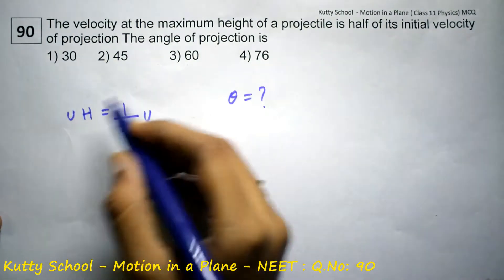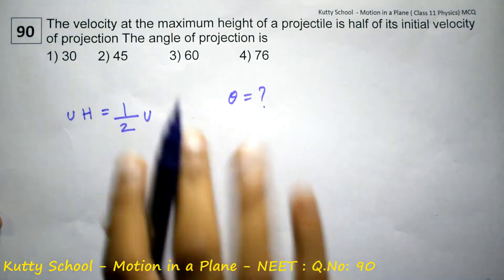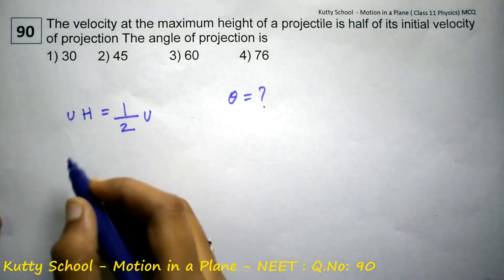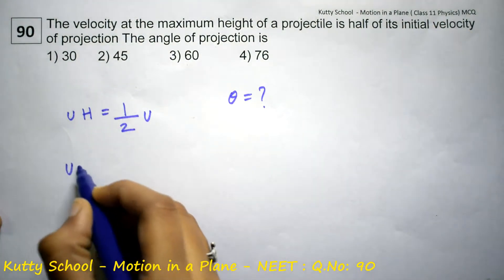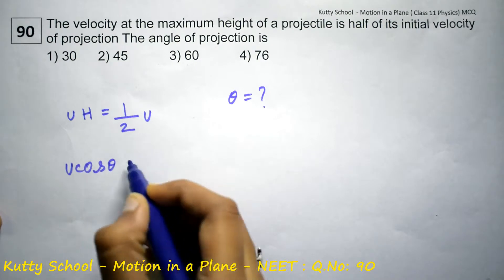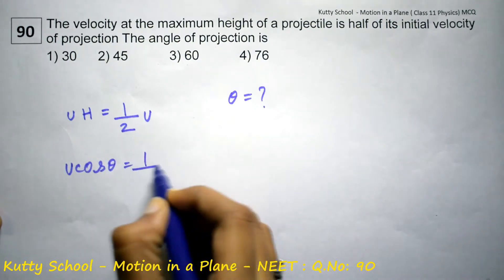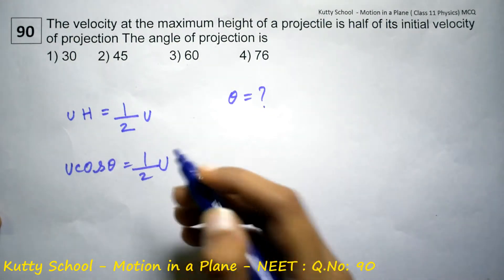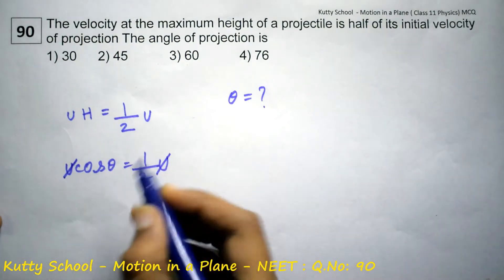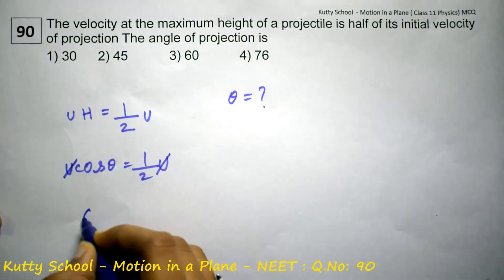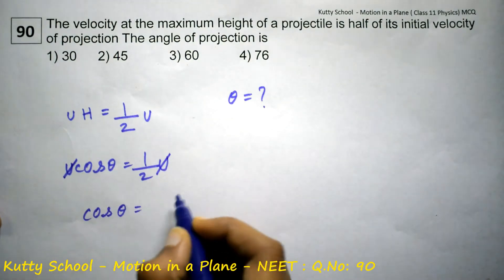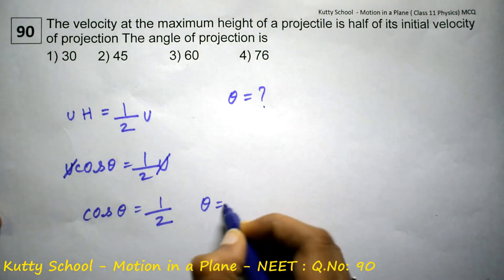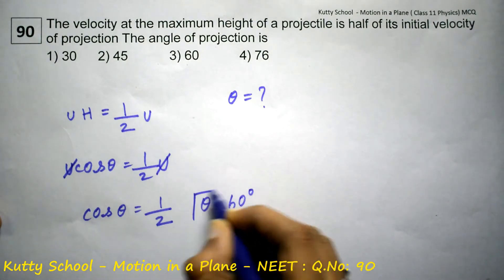At maximum height, we know the velocity at the maximum height of the projectile is equal to u cos theta, which is equal to half of the initial velocity. So u cancels. Therefore, cos theta is equal to 1 by 2. Therefore, theta is equal to 60 degrees.